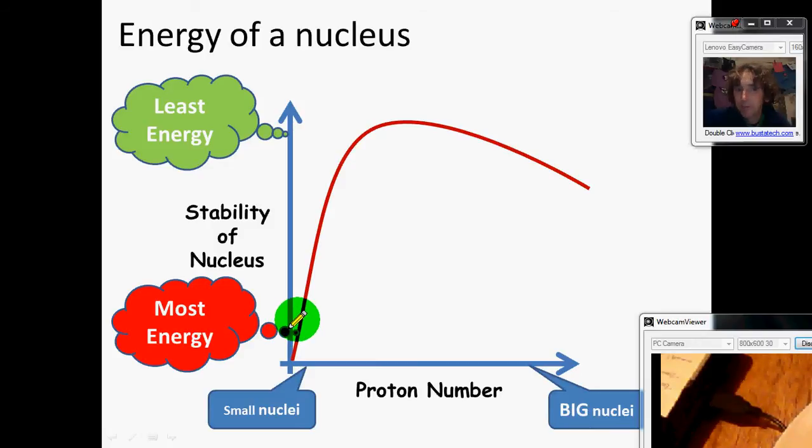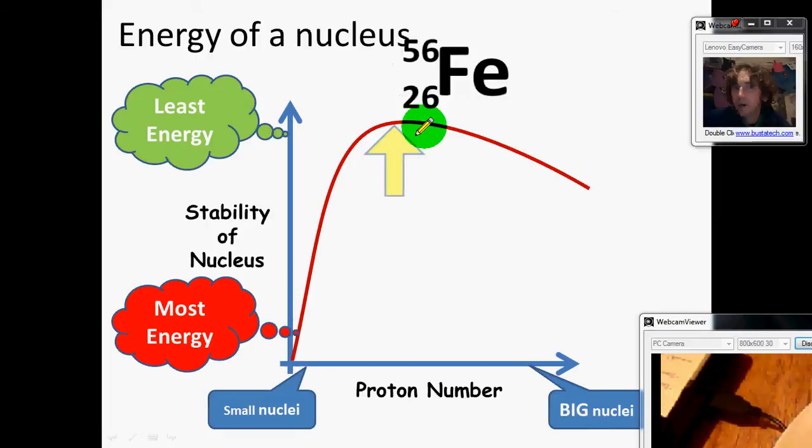Up here in the middle you see we've got the most stable things. When we get big again, atoms down here, that's like uranium and plutonium, they're not as stable, so they've got less energy. What's here in the middle? The winner, the most stable, is iron—26 protons plus 30 neutrons to make 56 for a mass number. Iron-56 is the most stable nucleus we know.